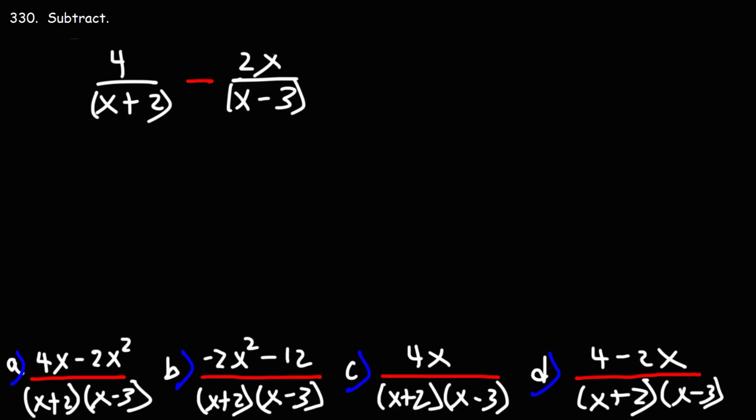In order to do that, just like before, we need to get common denominators. I'm going to multiply the second fraction using the denominator of the first one, and then I'm going to multiply the first fraction using the denominator of the second.